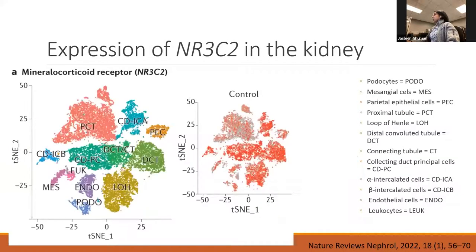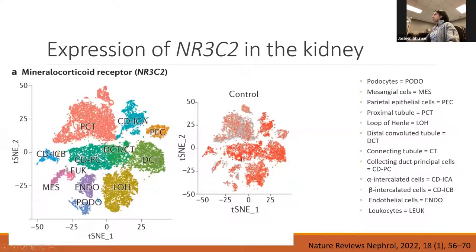Where in the kidney are the mineralocorticoid receptors located? Traditionally, we know about the aldosterone-sensitive mineralocorticoid receptors in the distal convoluted tubule. This single-cell transcriptomics shows expression of the NR3C2 gene within different kidney cells, where the density of red dots correlates to the number of mineralocorticoid receptors. The highest density is in the distal convoluted tubule, but these receptors are seen in pretty much all other cell types within the kidney as well.